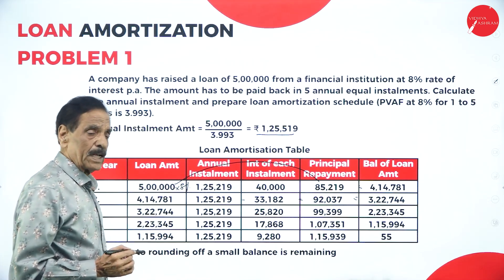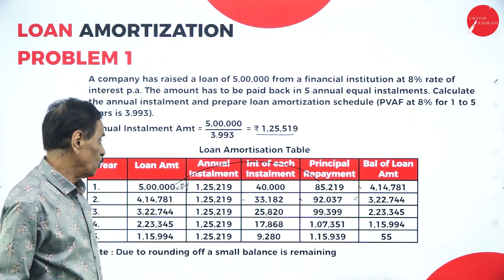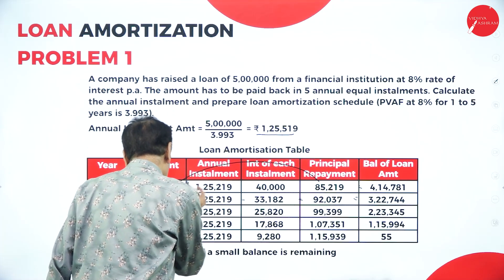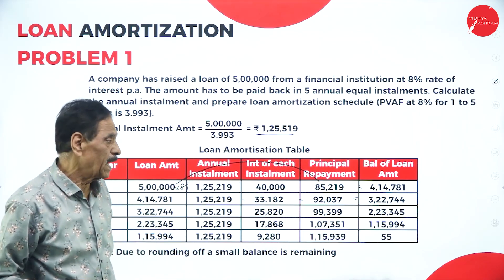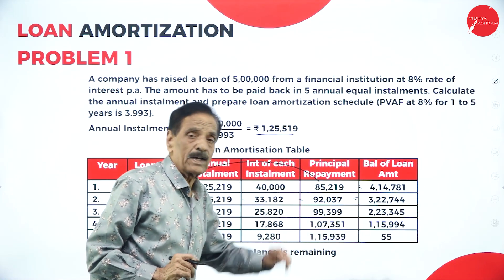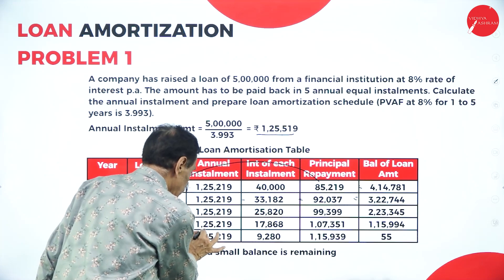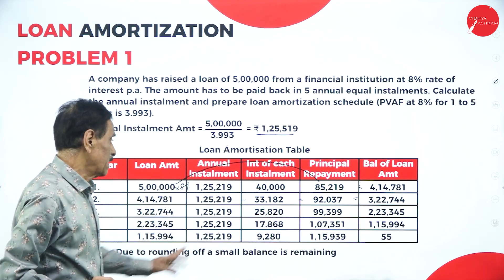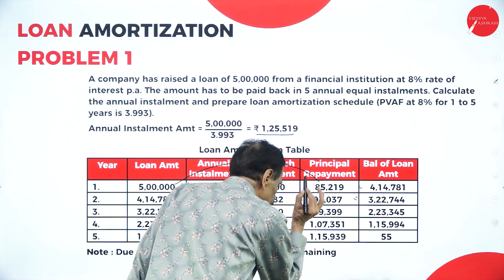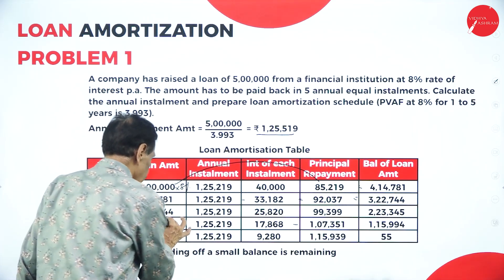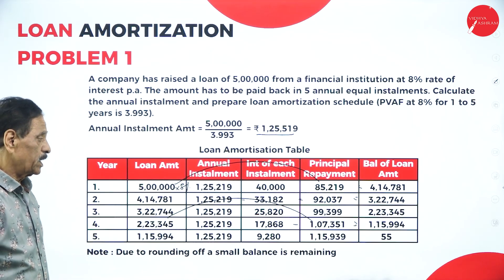Next year, the loan balance is 3 lakh 22,744. The installment is 1 lakh 25,219. The balance after this payment is 2 lakh 23,345. Installment of 1 lakh 25,219 is paid; interest on this is 17,868. Deduct from the installment; balance remaining is 1 lakh 15,994.